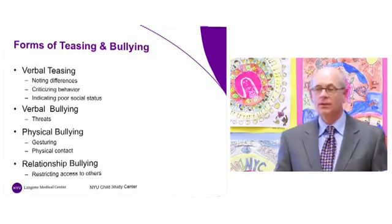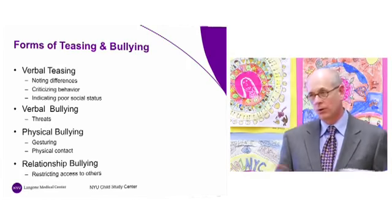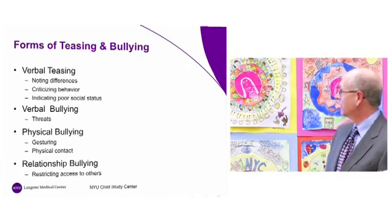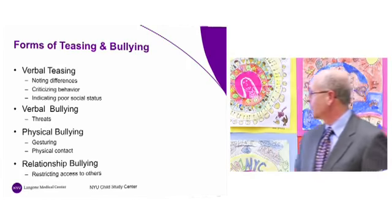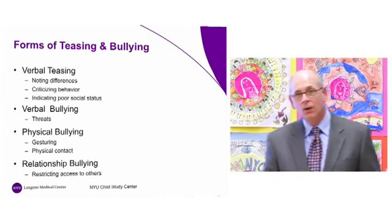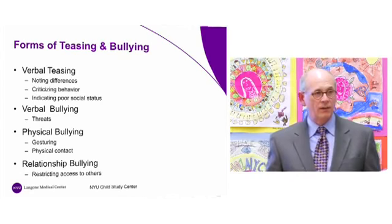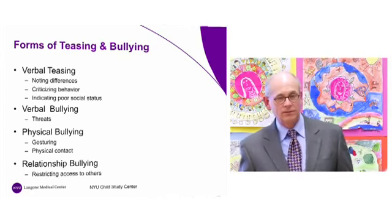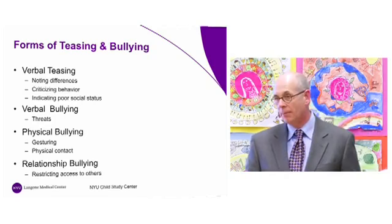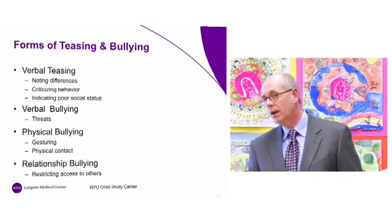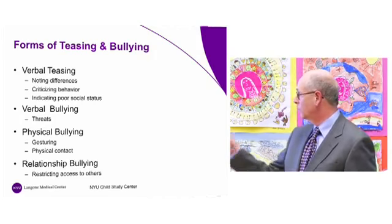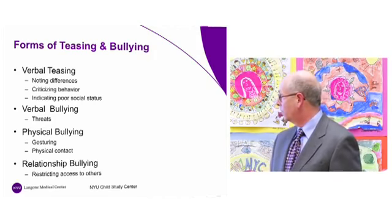A general tease is something like 'you're a loser' — indicating poor social status in the group. Verbal bullying involves threats — threats of having things happen to you — and this can take a couple of different forms, which can be either physical or relationship bullying.